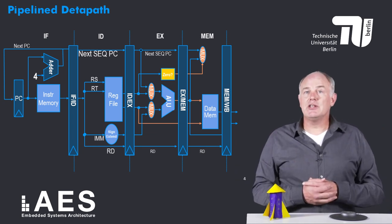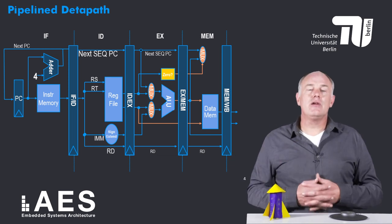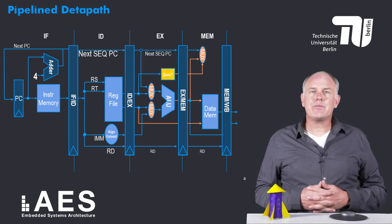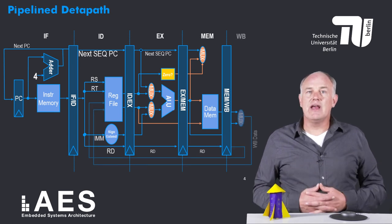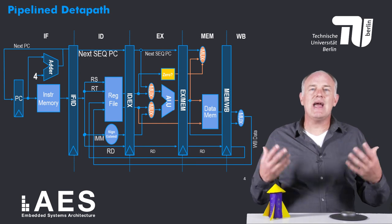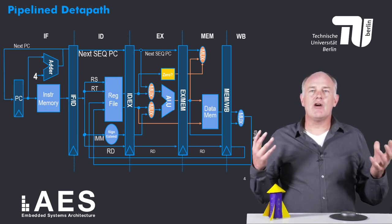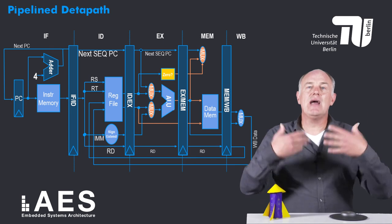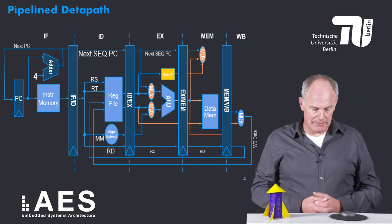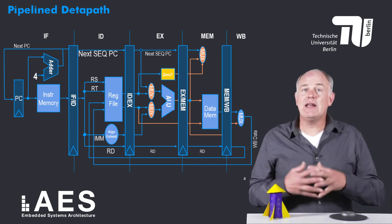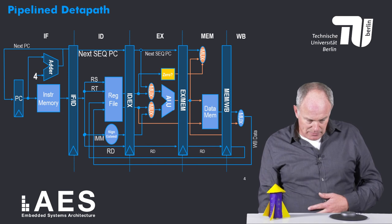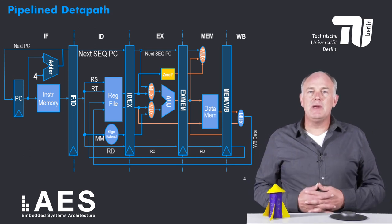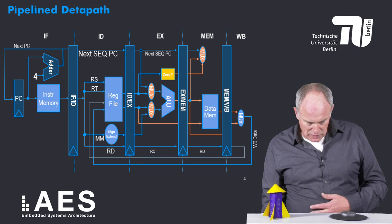Finally, the write-back stage. If applicable, the result of the instruction is written back to the register file. If the instruction is an R-type such as add, subtract, or logical OR, the result of the ALU two cycles ago is written back to the register file as indicated by this line. If the instruction is a load, the data read from memory in the previous cycle is written back. In both cases, the number of the register to be written is given by the RD field.